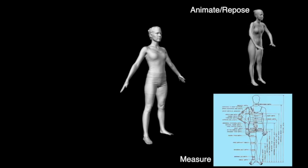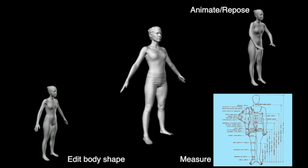Second, we must be able to extract accurate measurements from the scan, regardless of what pose it was captured in. Third, we want to be able to edit the body shape to increase or decrease weight or muscle mass, or simply to create new characters with different shapes.